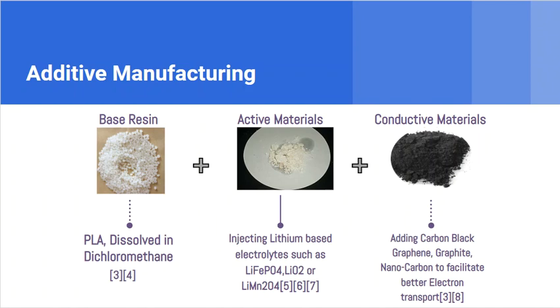The PLA is first dissolved in dichloromethane and mixed with lithium ions. The third ingredient is the conductive materials such as carbon black or graphite to get even better electron transport capacities. Additional additives also reintroduce the mix to uphold the mechanical strength of the battery when it is being 3D printed.